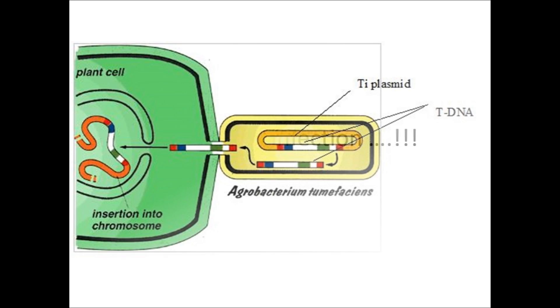Method of infection: The gene of interest is introduced into the Ti plasmid of Agrobacterium tumefaciens. It is then introduced into the plant cell and the gene of interest will get integrated with the plant chromosome.